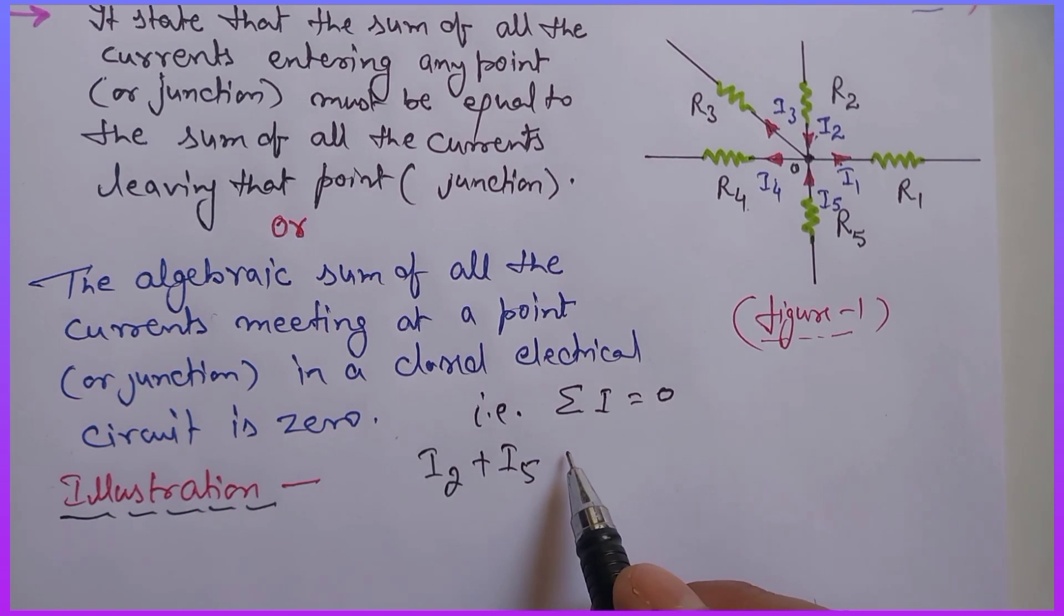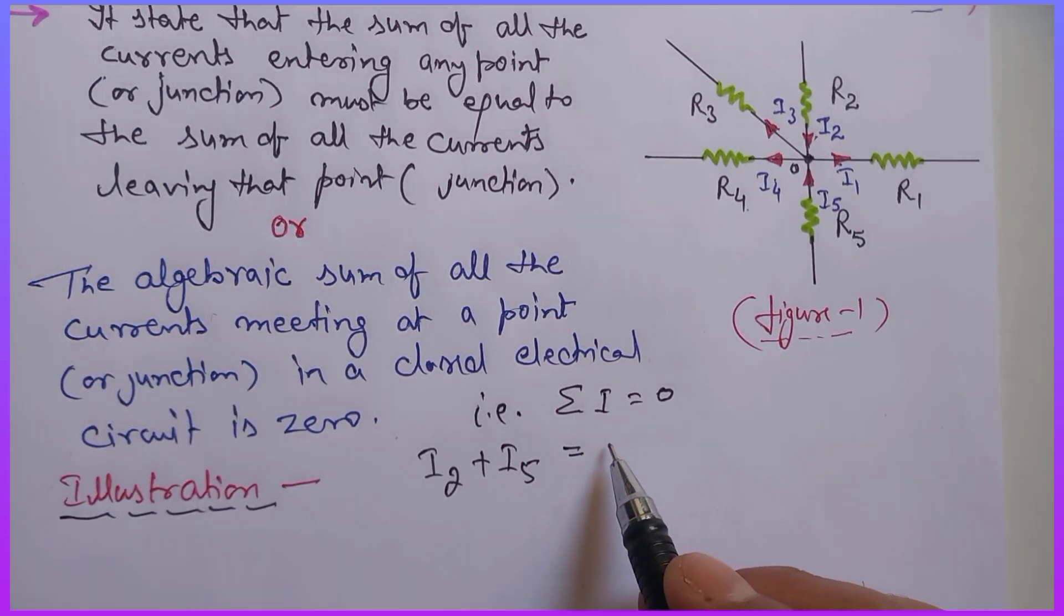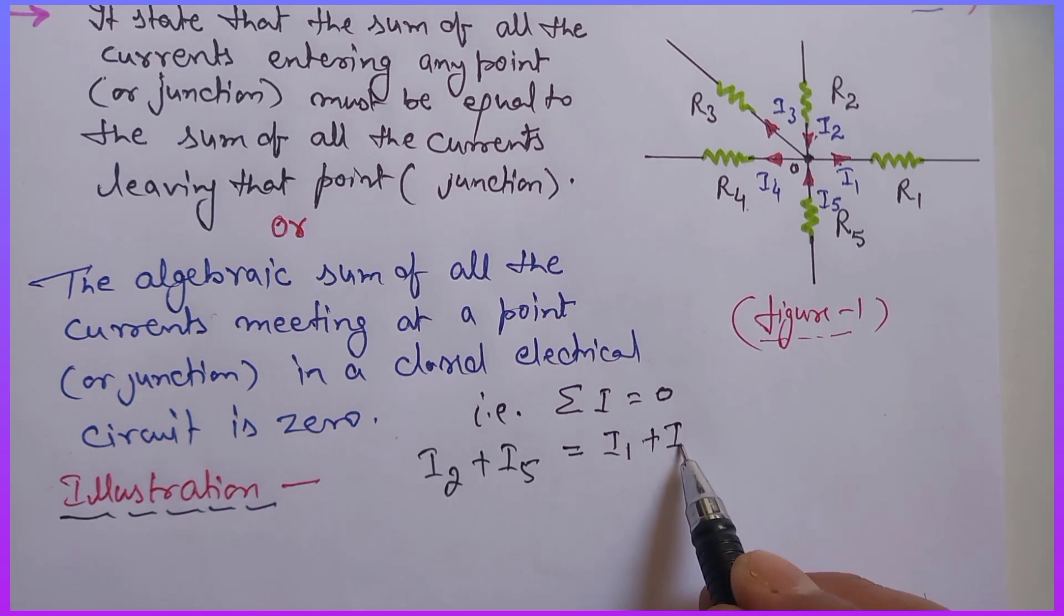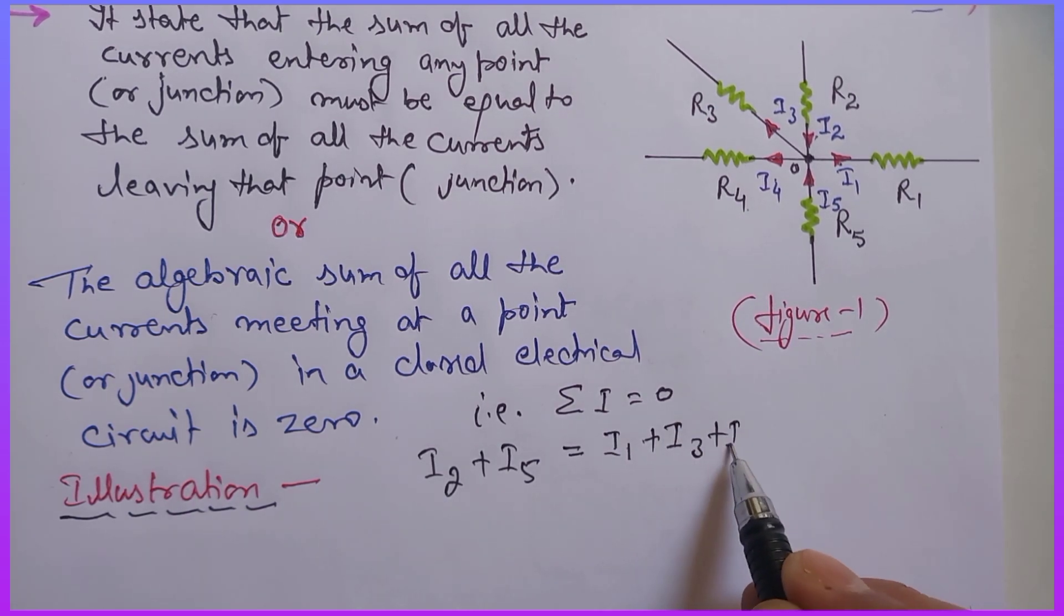In this figure one, I have a diagram. What will the sum equal? The current leaving will be i1 plus i3 plus i4.